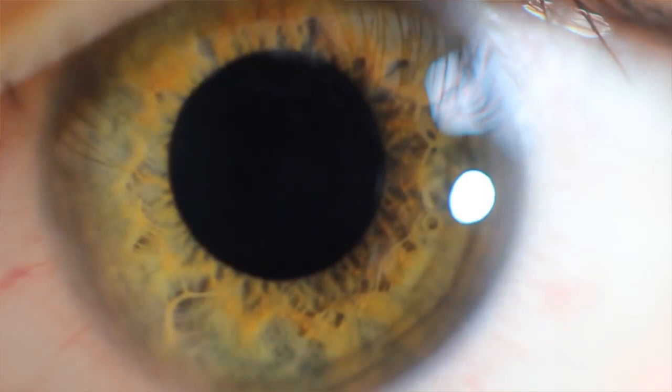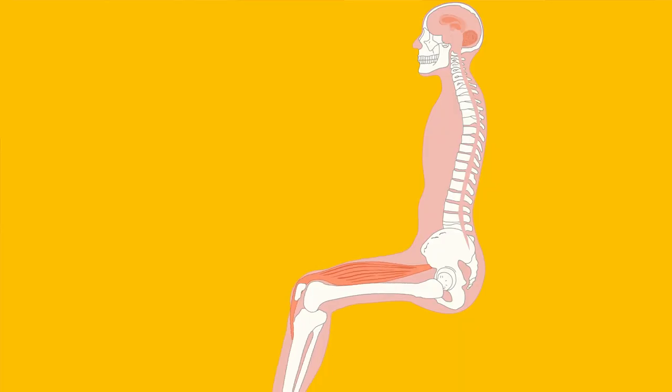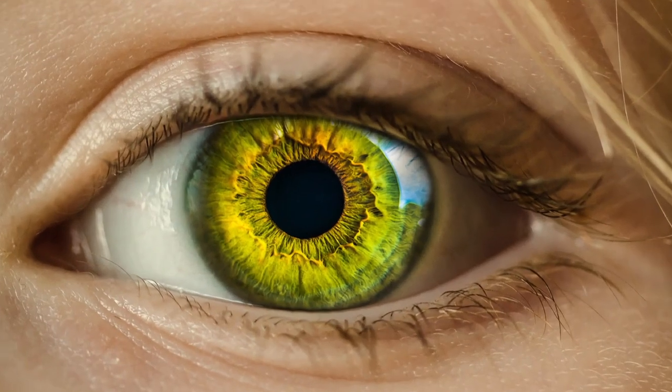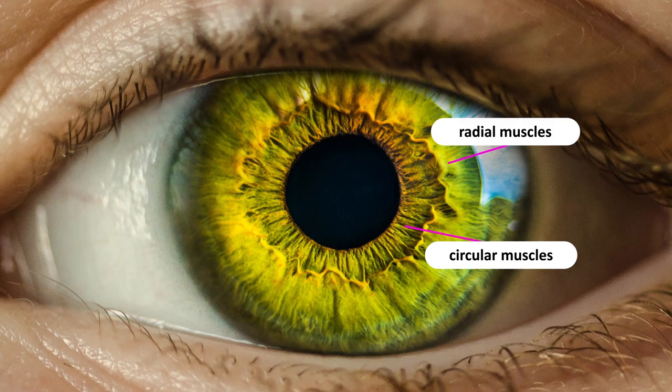But how does the pupil become bigger? I'll give a hint. How does our body move? Our body uses muscles to move. Exactly. Our eye also uses muscles to expand and contract. These are known as radial and circular muscles and are present in the iris around the pupil.